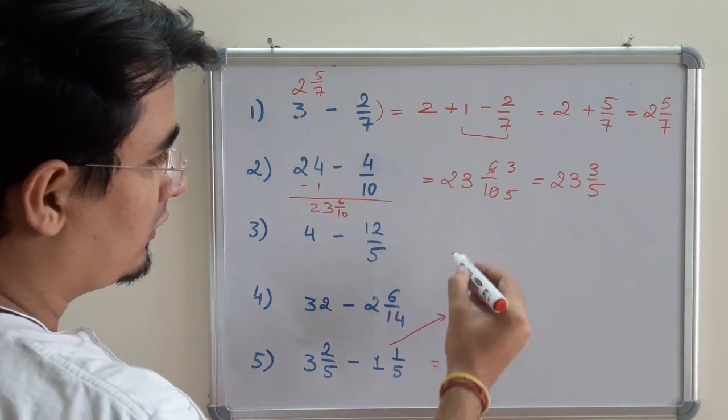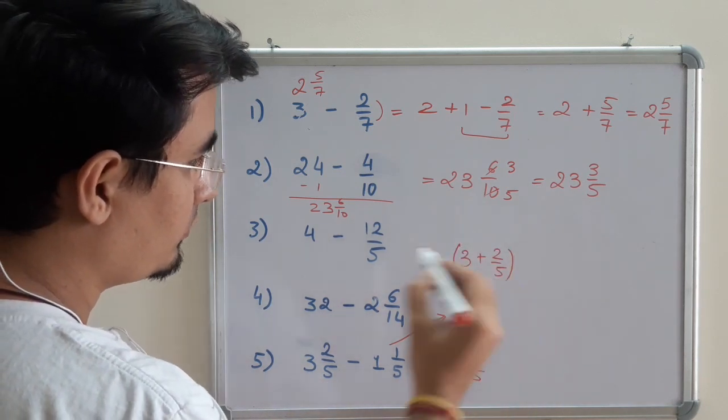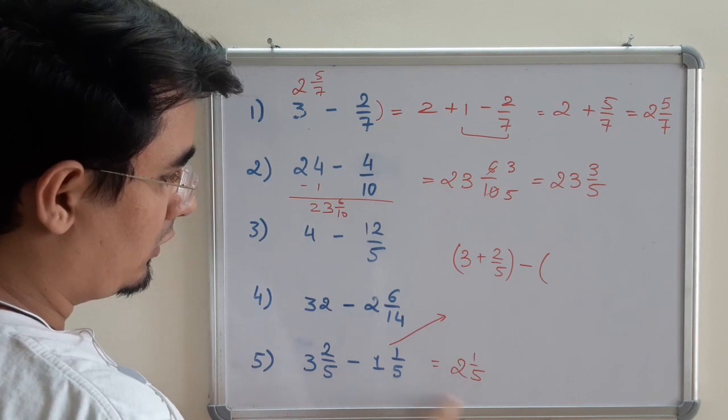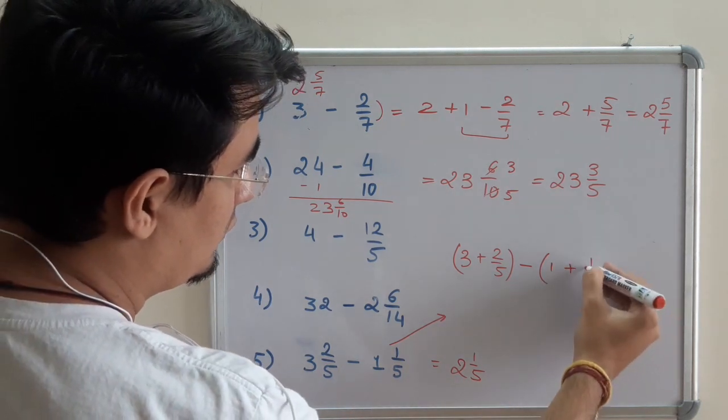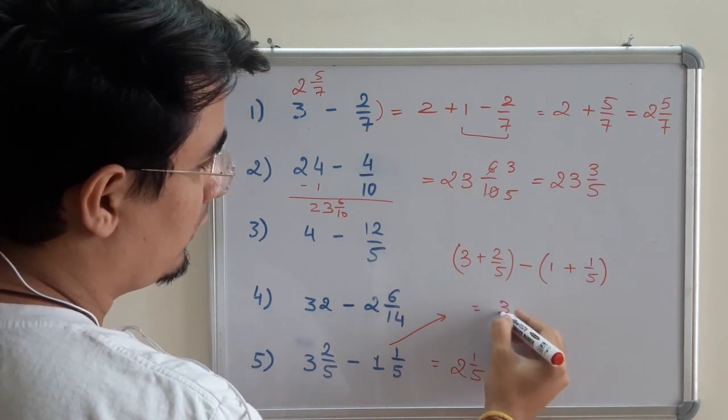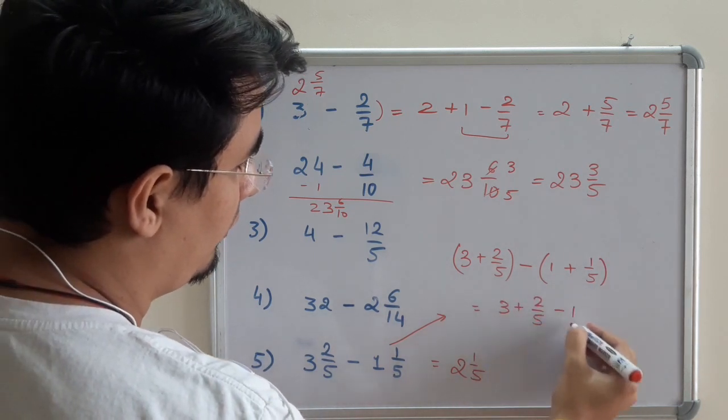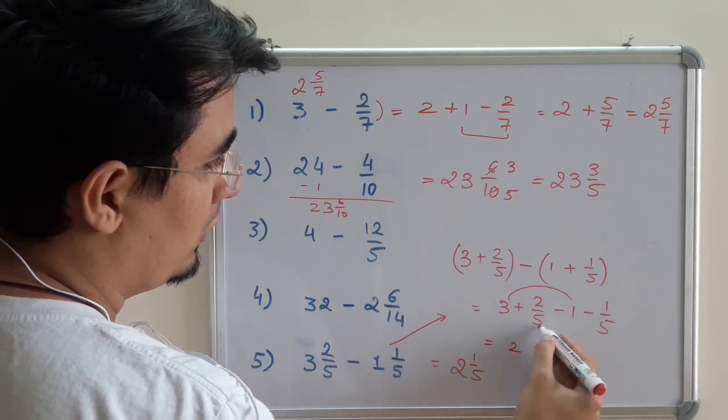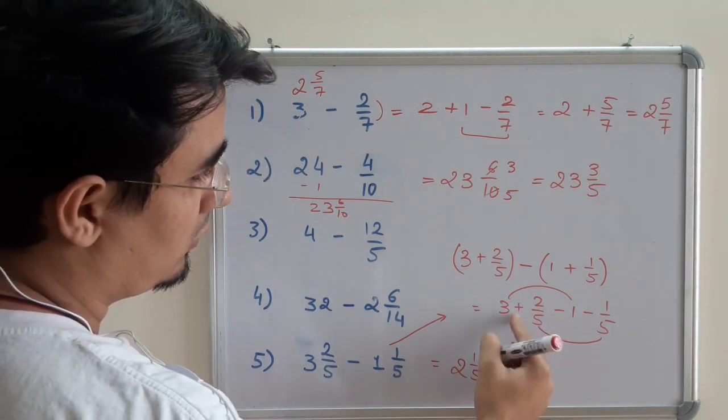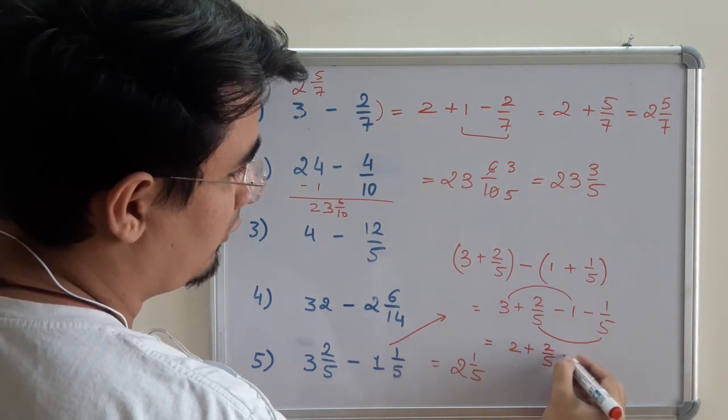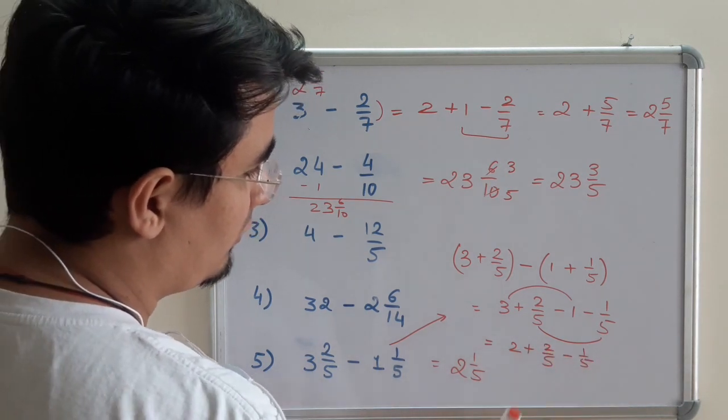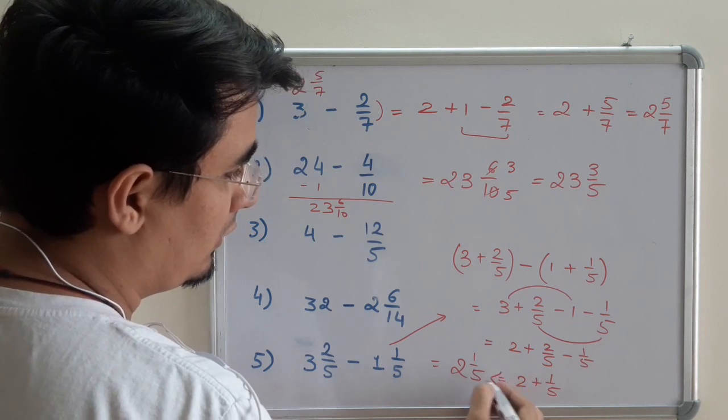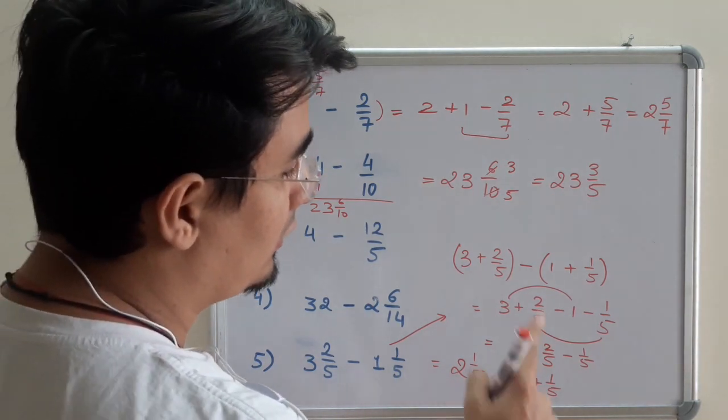3, 2 by 5 is nothing but 3 plus 2 by 5 minus - just for the explanation, I am showing you the long method. This is a shortcut. So 1 plus 1 by 5. Open the brackets. 3 plus 2 by 5 minus 1 minus 1 by 5. So 3 minus 1 is 2. And considering these two together, suppose this is plus 2 by 5 minus 1 by 5, 2 by 5 minus 1 by 5 is 2 plus 1 by 5. And this will be 2, 1 by 5. This we have done in the first video of the series.